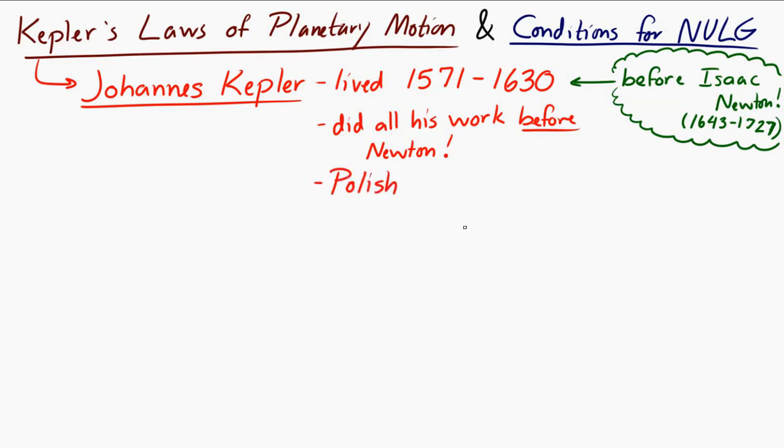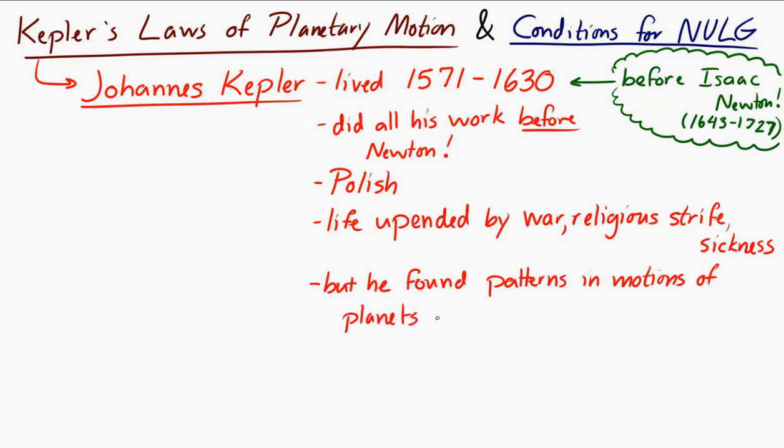Johannes Kepler was Polish. His life was completely upended by war. He lived in a time when Europe, that part of Europe especially, was in continual upheaval. There was a lot of religious strife surrounding him and sickness, both in himself and in those around him. But despite all of this, he found patterns in the motions of the planets that are now known as Kepler's Laws of Planetary Motion.